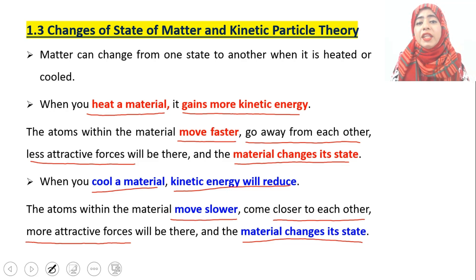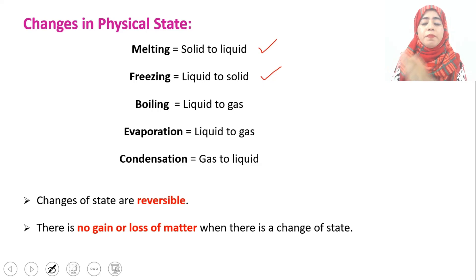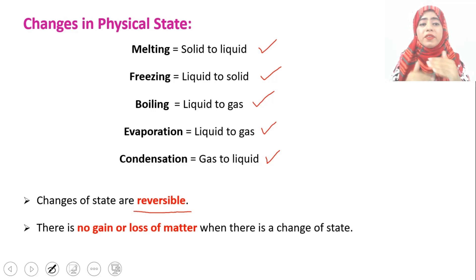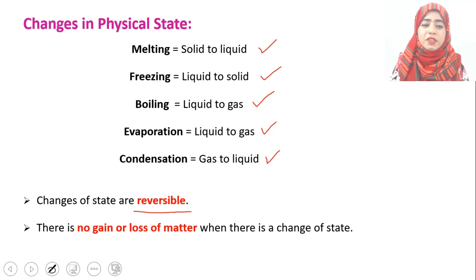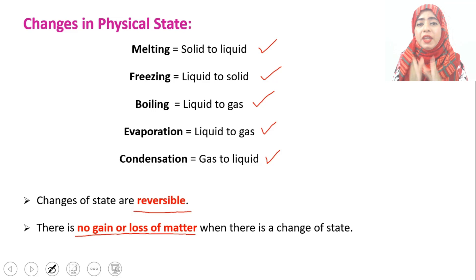Whenever we heat or cool a material at a specific temperature, it will change state. We can have different types of changes of state: melting, in which solid changes into liquid; freezing, in which liquid changes back into solid; boiling and evaporation, in both of which liquid changes to gas; and condensation, in which gas changes back into liquid. All these changes of state are reversible. They are physical changes, meaning we can reverse them and there will be no loss or gain of matter.